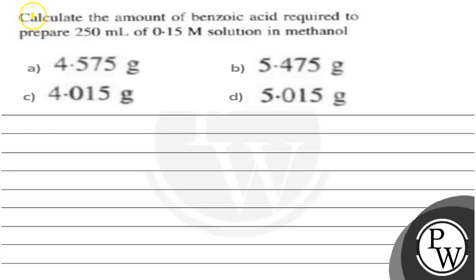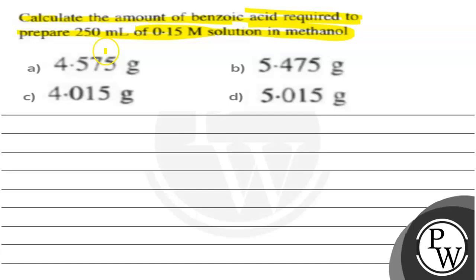Let's read the question. The question states: calculate the amount of benzoic acid required to prepare 250 ml of 0.15 M solution in methanol. The amount of benzoic acid means we have to calculate the mass of benzoic acid. The given options are: A — 4.575 grams, B — 5.015 grams.